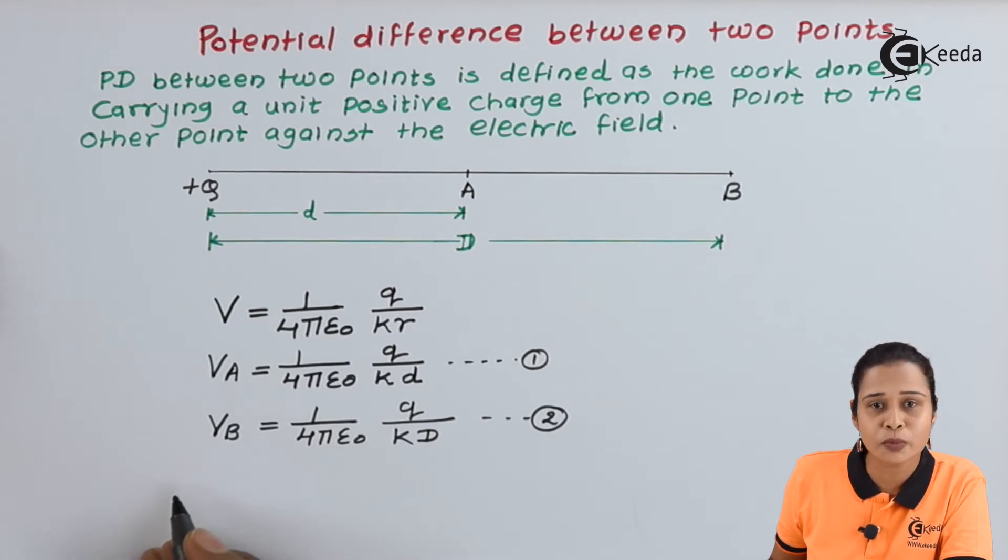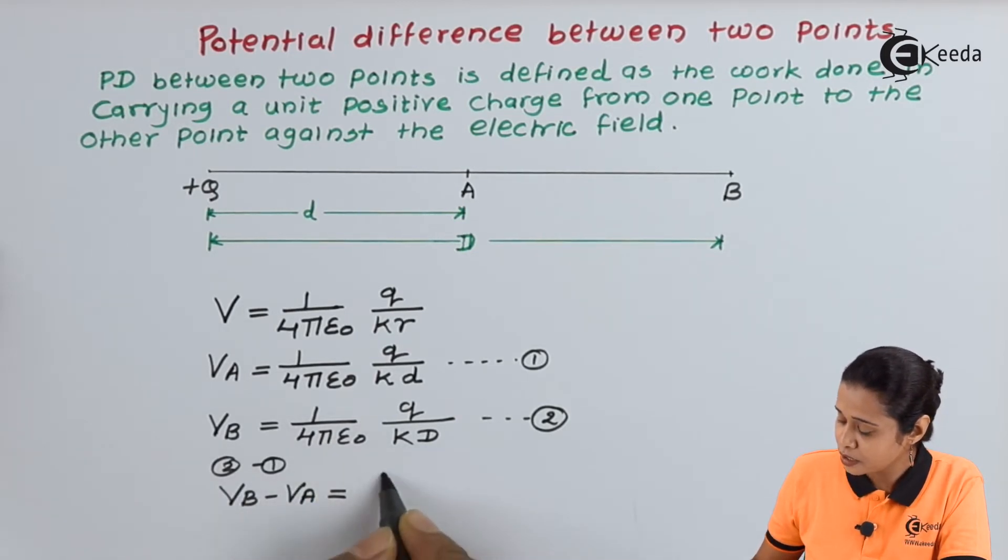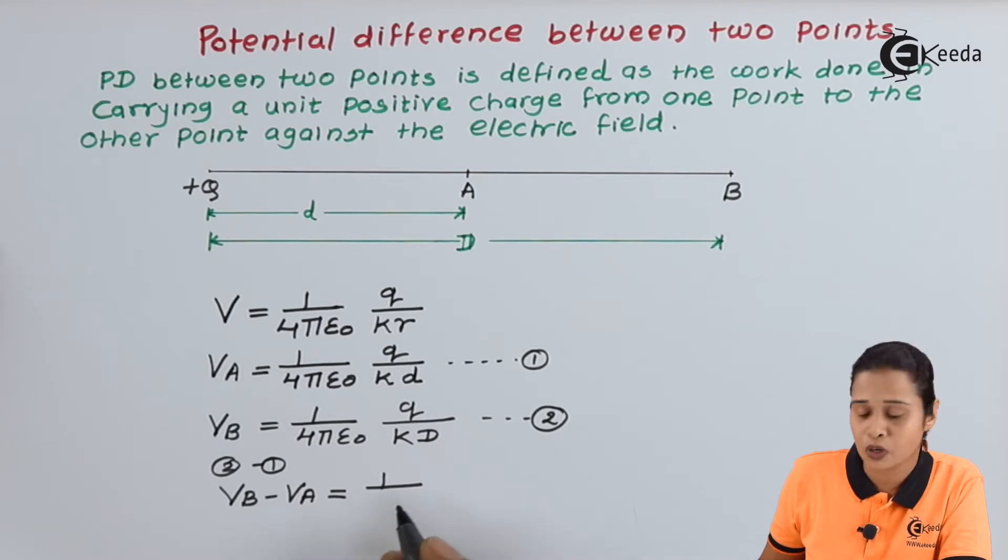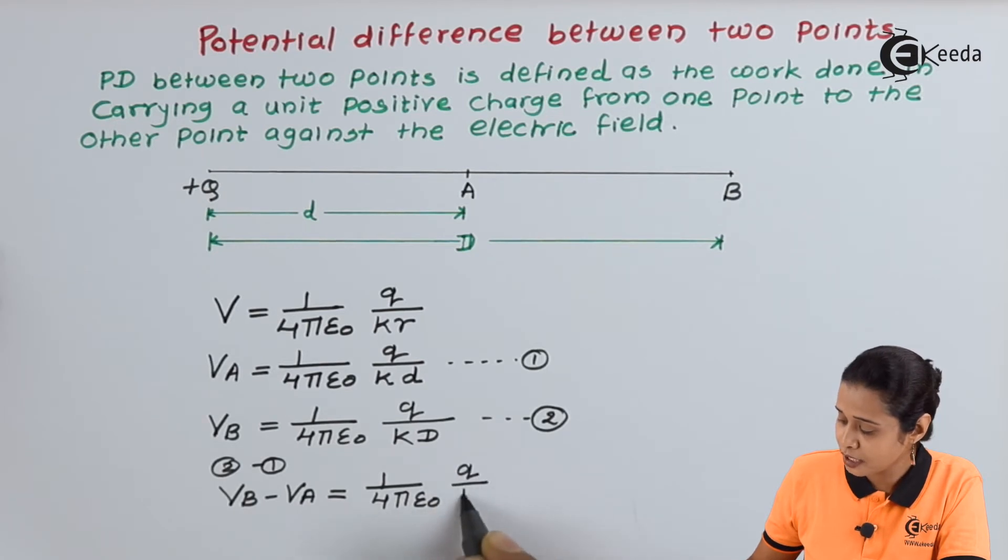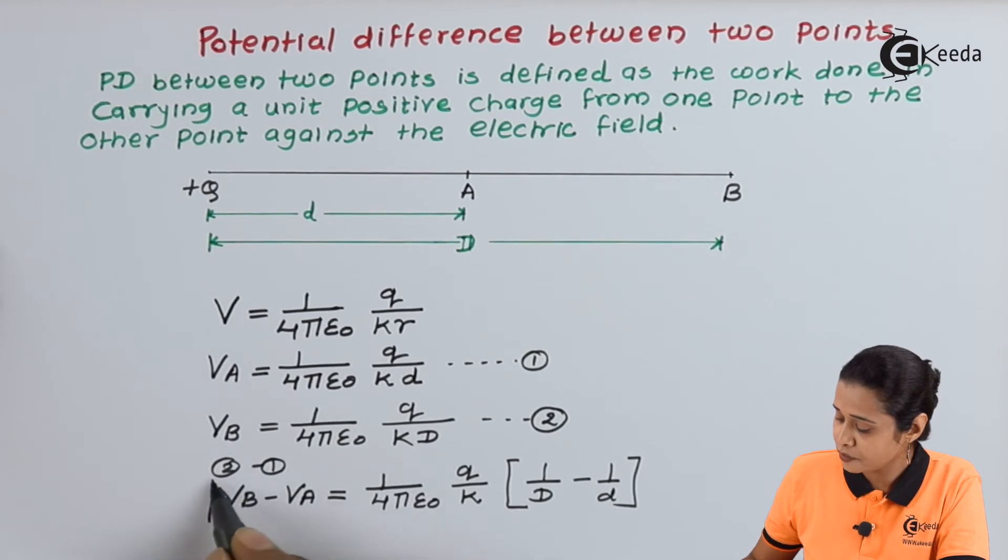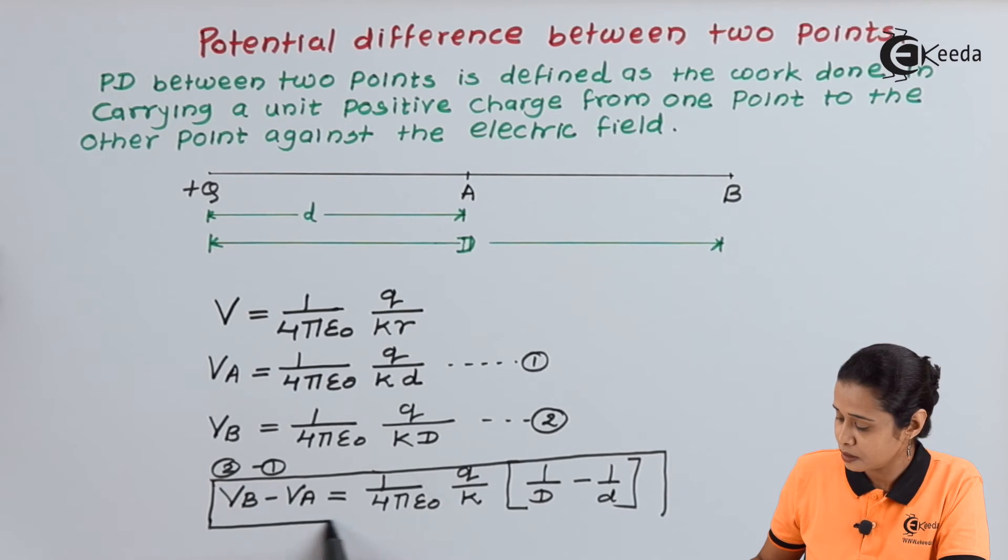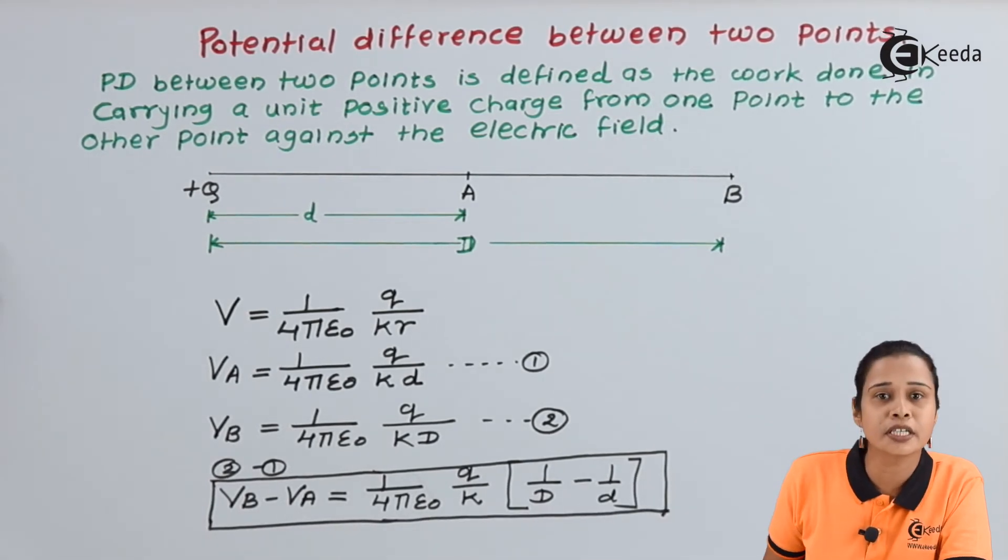Now we will take equation 2 minus 1. Hence VB minus VA equals, 1 upon 4 pi epsilon naught will be common, then Q upon K will also be common. Here we have 1 upon D minus 1 upon small d. So this is the equation for potential difference between two points.